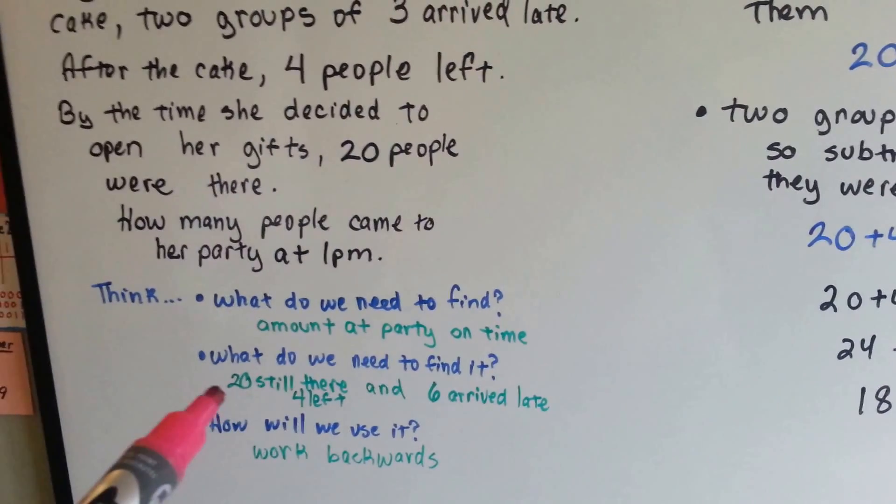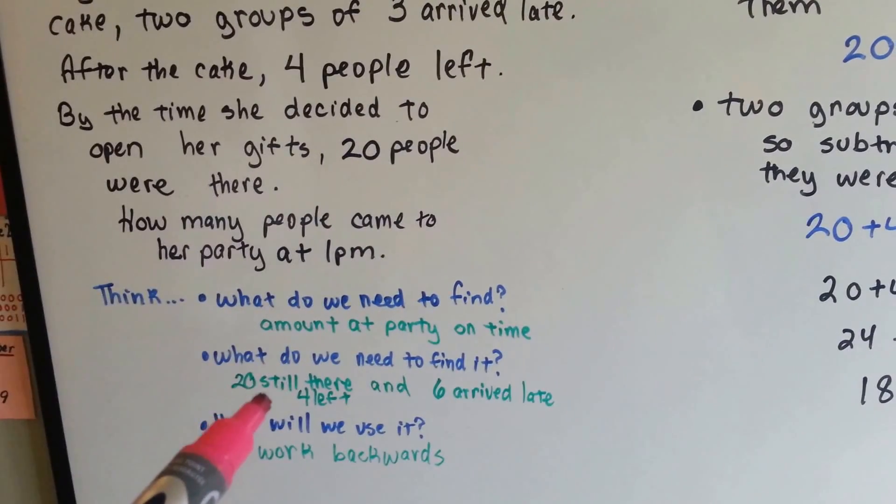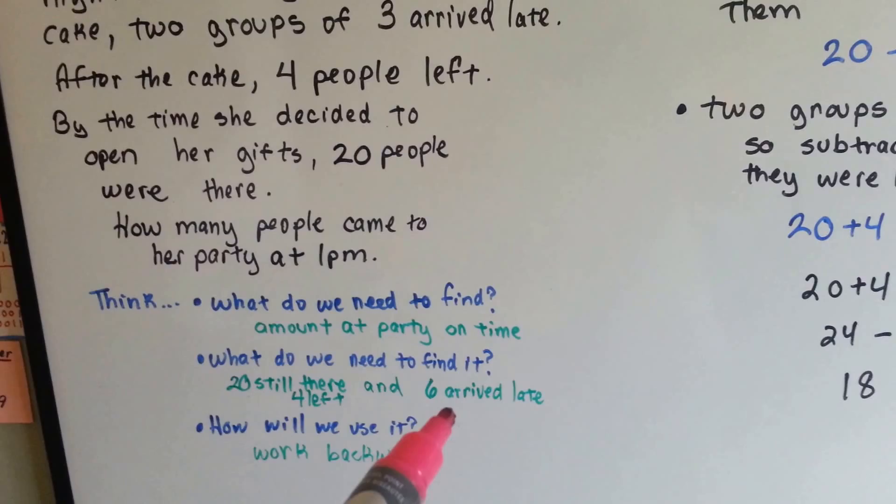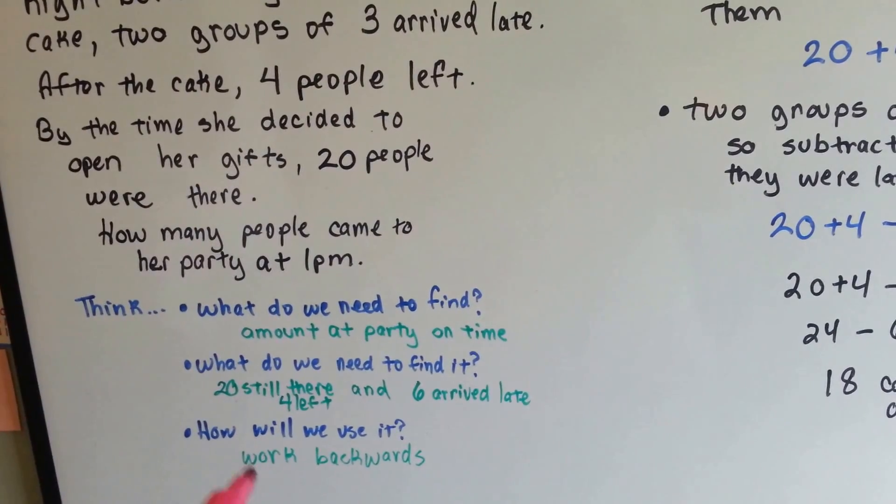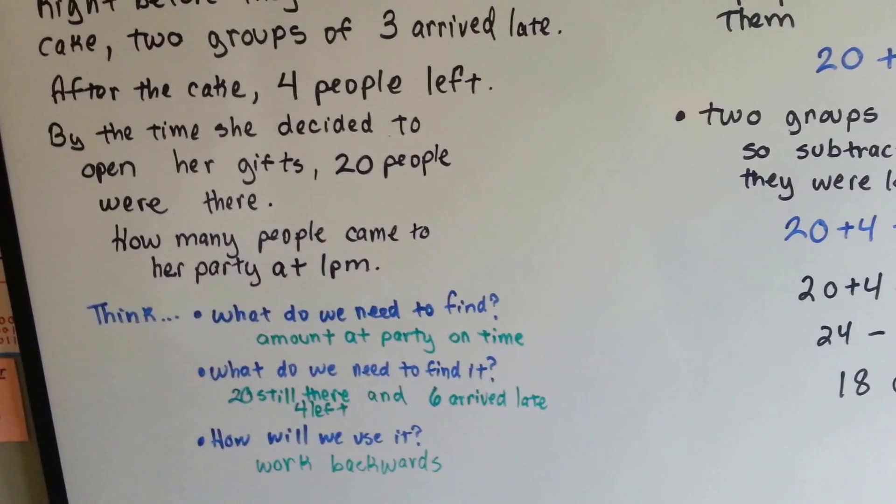What do we need to find it? What information do we need? Well, that there were 20 still there, that six arrived late, and four left. See, two groups of three, that's the six. How are we going to use it? We're going to work backwards.